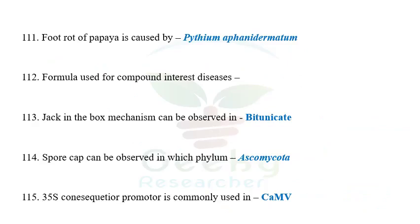The next question: foot rot of papaya is caused by Pythium aphanidermatum. The next question: the formula used for compound interest diseases — I think it involves xt/x0 raised to something like e to the power r×t; I'm not certain. The next question: the jack-in-the-box type of mechanism can be observed in bitunicate asci only. The next question: spore cap can be observed in Ascomycota.